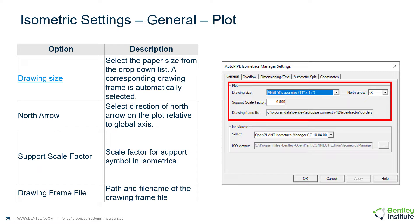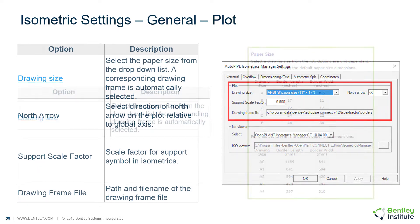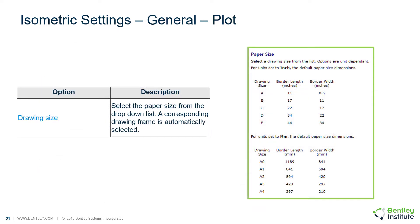Next, we'll look at the isometric settings. The first setting is the drawing size, which you will select a paper size from a drop-down list. Drawing sizes range from A to E with the dimensions shown in English units, and from A0 to A4 in metric. Selecting a drawing size will update the drawing frame file name for the appropriate drawing size.